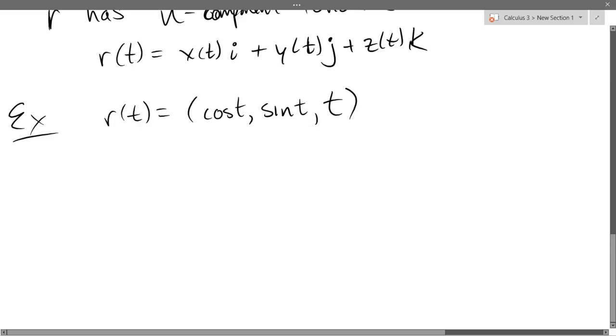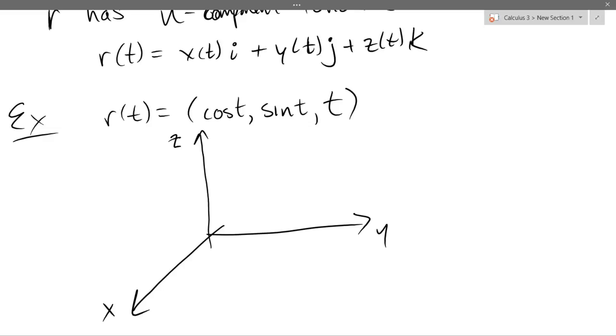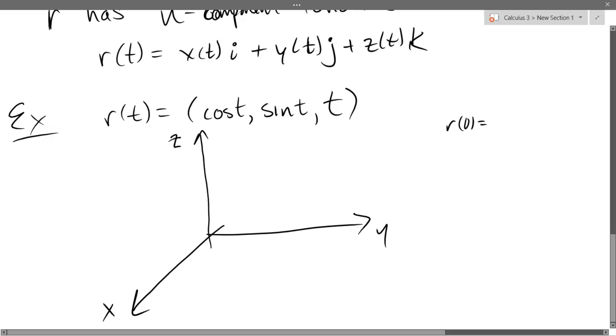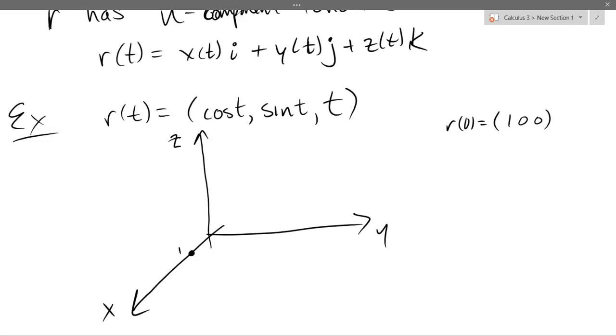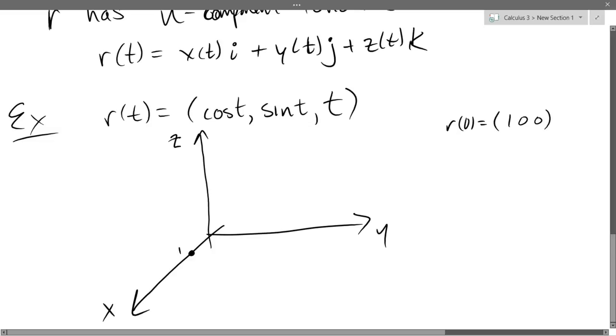Now we're in three dimensions, so we'll have the standard Y, X, and then Z is going up. In the X, Y plane, we've got circles. So let's figure out where is R of 0. We're going to write down the coordinates for R of 0, which will be 1, 0, 0. We'll just go 1 down on the X axis.